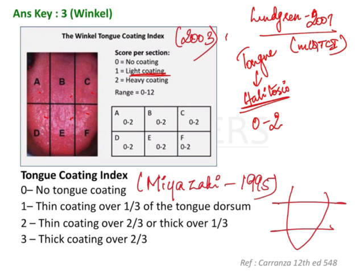In the Winkle index, you grade each of the six sections from 0 to 2 based on the amount of coating present, giving a total score range of 0 to 12.